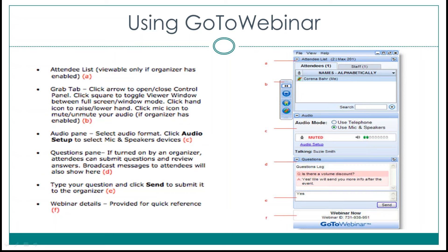If you have a question, you can raise your hand by clicking on the hand icon on the control panel and I can unmute your line. Another way to participate is through the question pane, which is B. You can type your question in the question pane and I can read it to the group or respond privately.